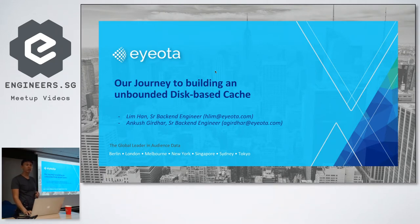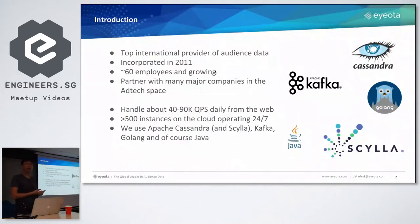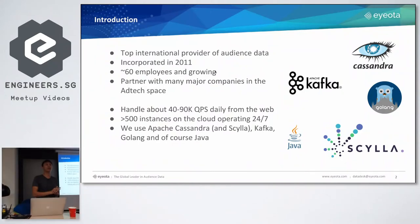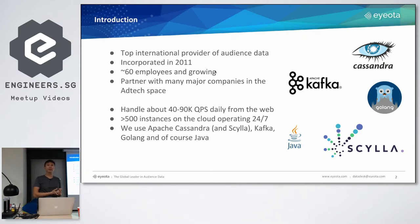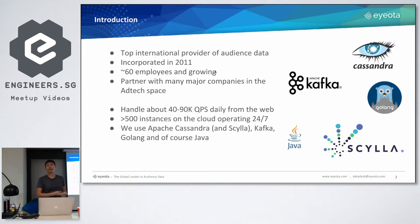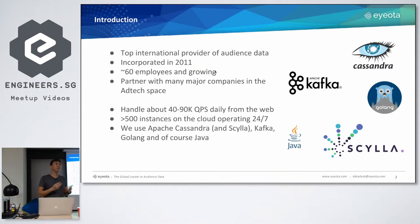Let me start by introducing our company. IOTA is a top international provider of audience data. We were founded in 2011 and we have about 60 employees located around the globe. We are partners with many major ad tech companies in this space. In terms of the tech that we are doing, we handle about 40 to 90,000 queries per second from the web daily. We have more than 500 instances deployed across cloud infrastructure that we own. We work with Apache Concentra, Scylla, Kafka, and we are now venturing into Golang — and of course, we're dealing with Java as well.